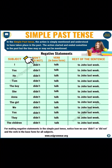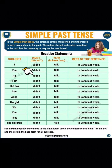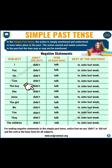Subject: I. Didn't. Verb: talk. Rest of the sentence: to John last week. I didn't talk to John last week. Subject: you. Didn't. Verb: talk. Rest of the sentence: to John last week. You didn't talk to John last week. Subject: he. Didn't. Verb: talk. Rest of the sentence: to John last week. Subject: she. Didn't. Verb: talk. Rest of the sentence: to John last week. She didn't talk to John last week.